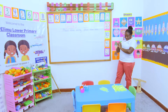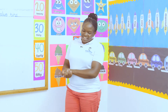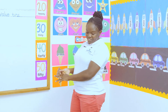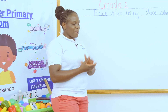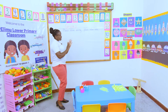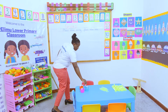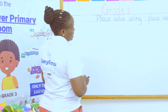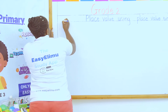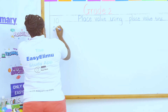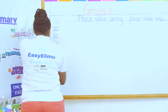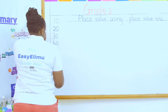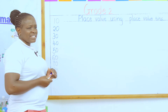We have done place value using the place value chart, using the place value teens before, and using counters. But now I want to introduce another number. We have been only talking about ones and tens. Yesterday when we were talking about tens, I told you tens are these numbers: 10, 20, 30, 40, 50, 60, 70, 80, 90.